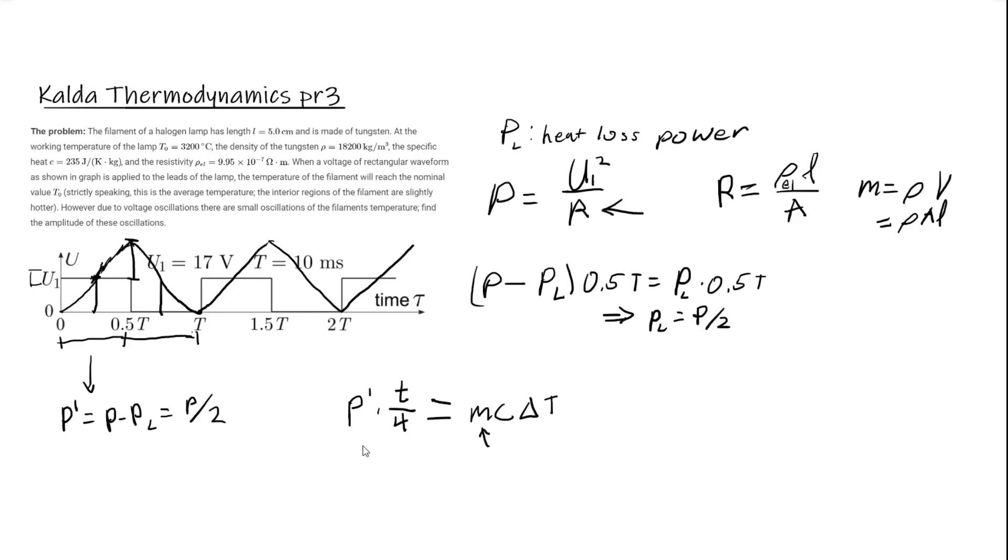Let's plug these in. We have U sub 1 squared over 2, since it's 2R, times rho L l over a times t over 4 equals rho a l times c delta t. We have everything here we can solve. We can cancel areas, which we actually did not have.